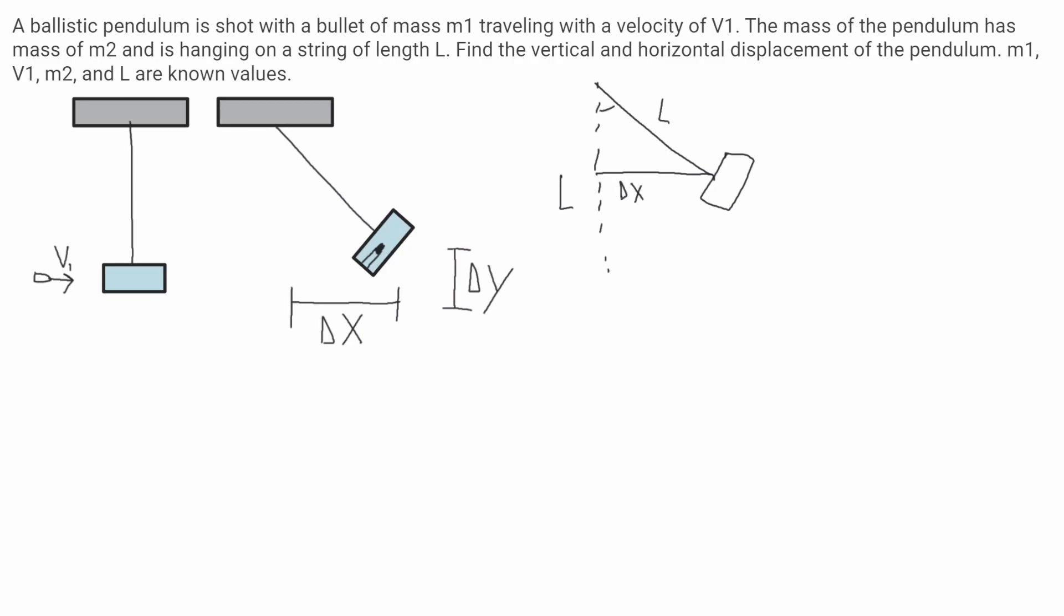This part here would be the horizontal displacement, delta x. This pendulum also makes some angle from the vertical I'll call theta. So delta x will be equal to L sine of theta.